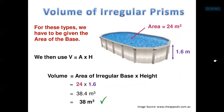If we have an irregular prism, where the base is a shape we can't easily find the area of, they will give us the area of the base. So if the area of the base is 24 meters squared, we just multiply the area times the height: 24 times 1.6.